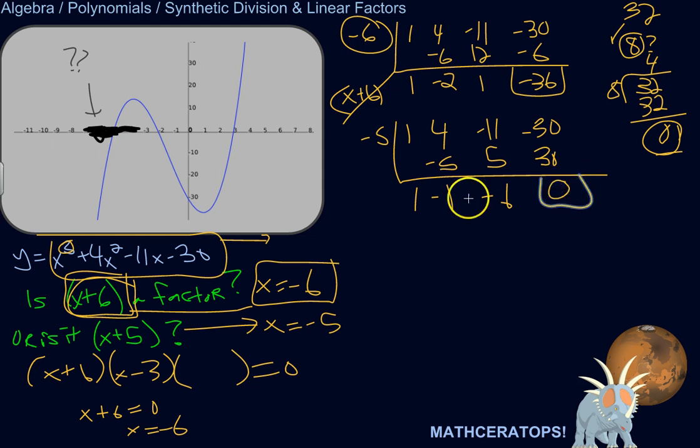So the remainder of that division is 0. So yes, x plus 6 is a factor. It is one of the linear factors. And that means x equals negative 6 is that root that's right there. That's negative 6. So it crosses the x-axis at negative 6.